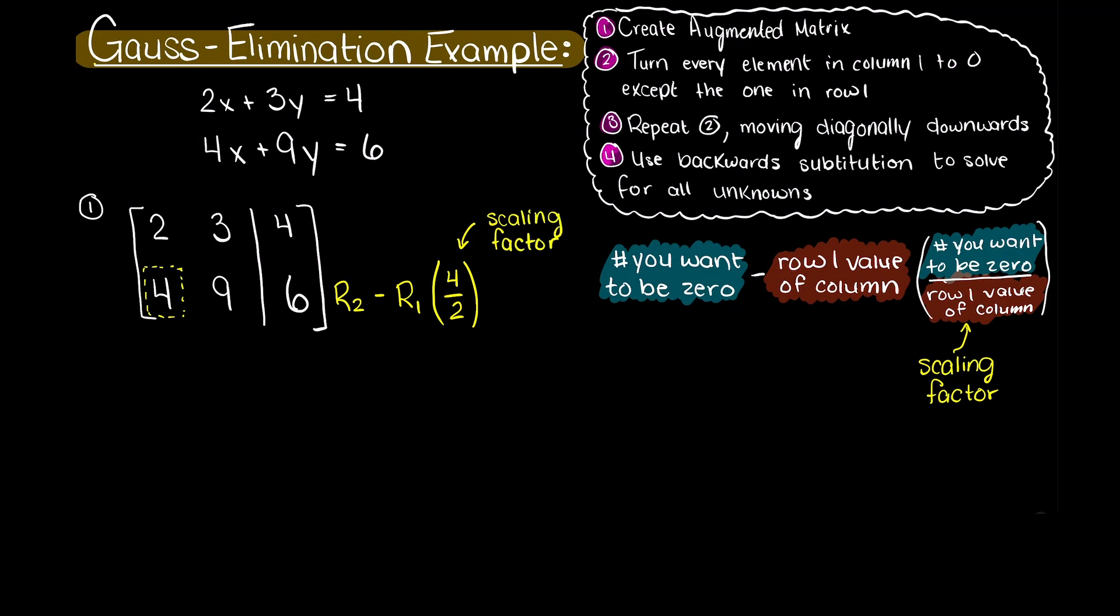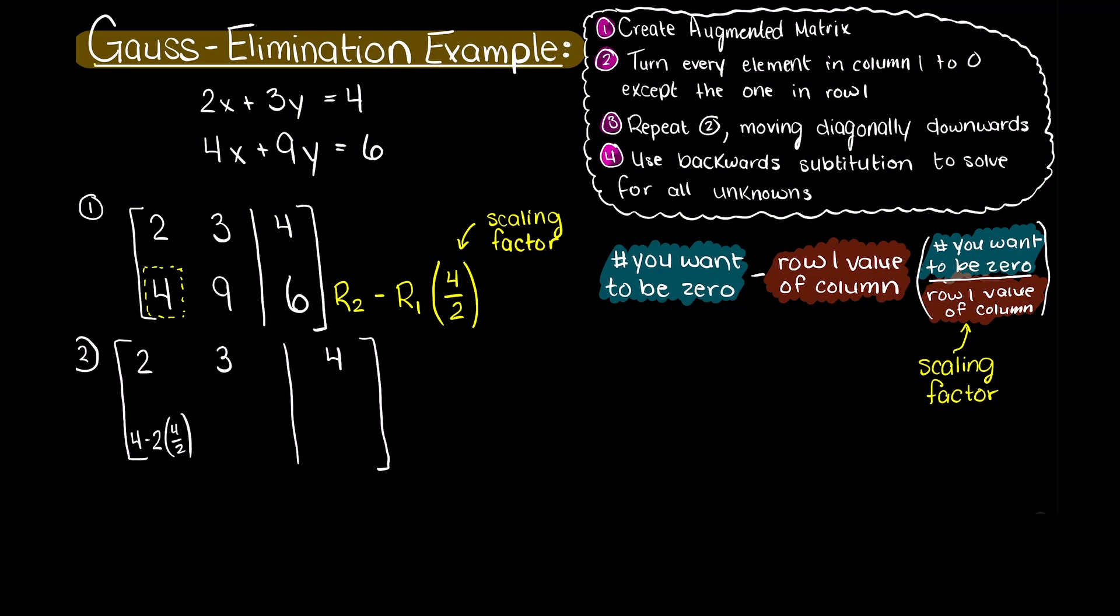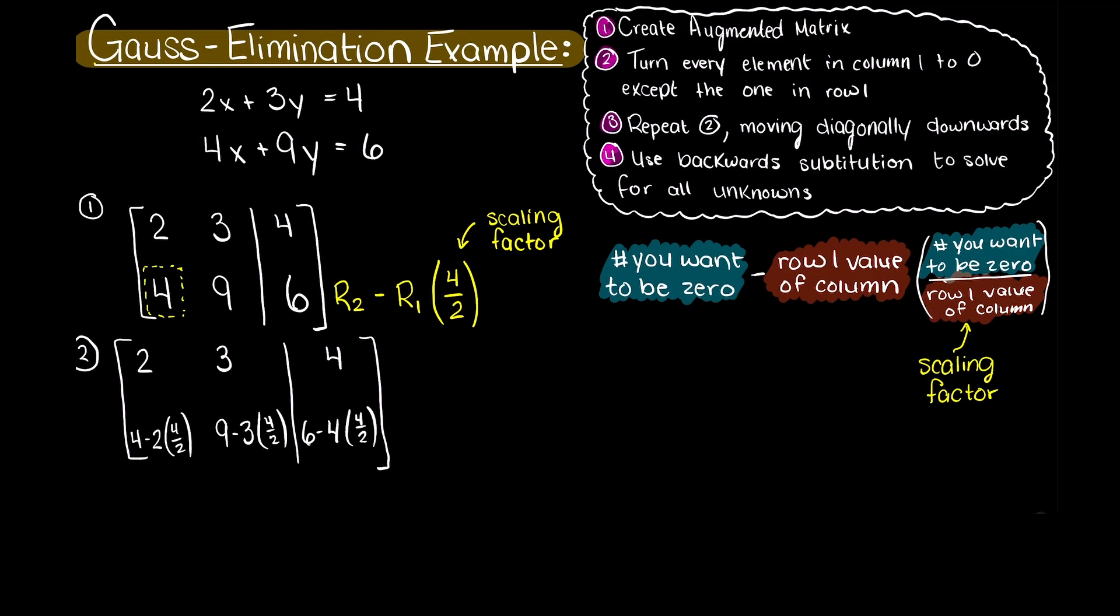We take this value minus our row that we are not changing, row 1 in this case, then multiply this by our scaling factor. This will set this number to our initial one ensuring that we always get 0. Then we must complete the same calculation for the remaining values in that row, with the initial scaling factor always staying the same.